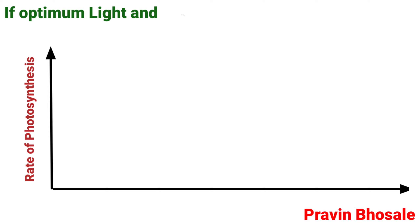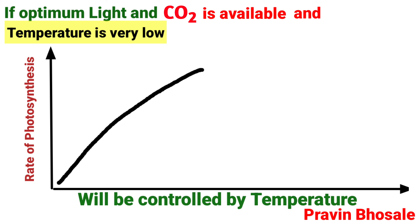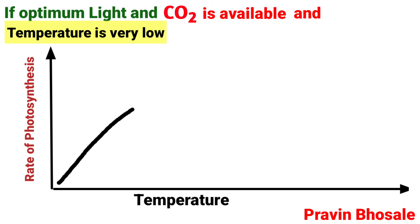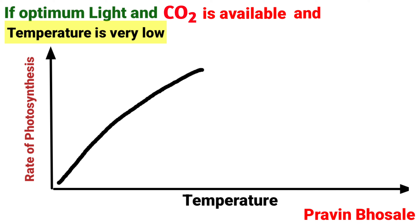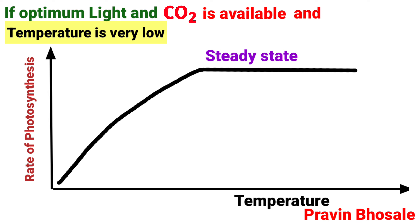For example, if optimum light and carbon dioxide are available and temperature is very low, then the rate of photosynthesis will be controlled by temperature. An increase in temperature will cause an increase in the rate of photosynthesis, and then there will be a steady state.